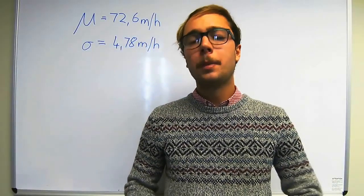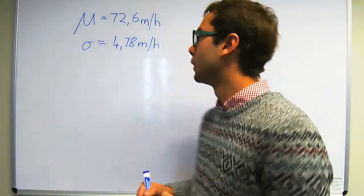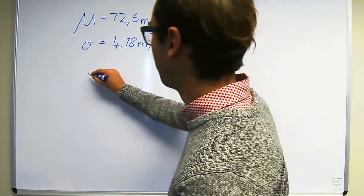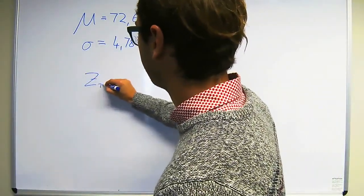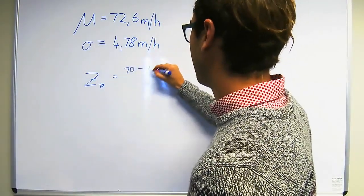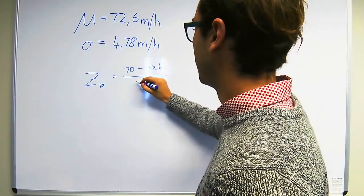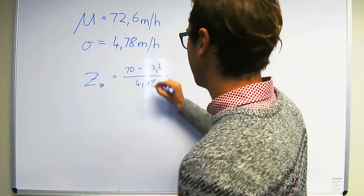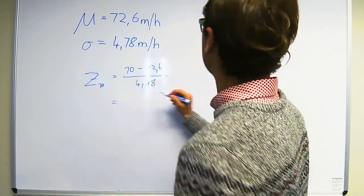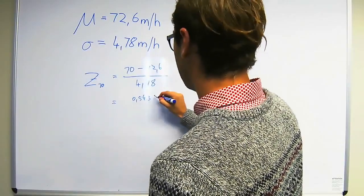The last question asks us, what percentage of passengers travel above the speed limit? And the speed limit is 70 miles per hour. We start off by normalizing the 70. Our observation is 70, our mean is 72.6, and our standard deviation is 4.78. We find that the Z-value for that is minus 0.5439.